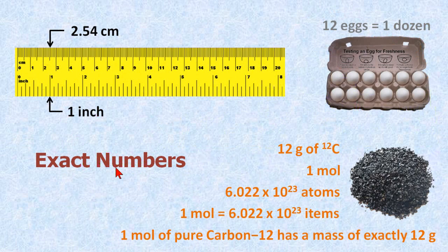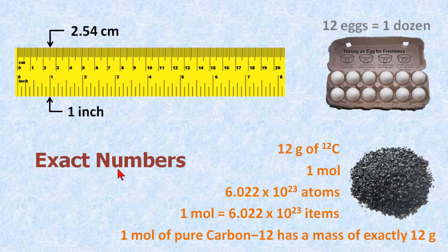Exact numbers differ from measured numbers in that they are exact. An easy example for most people to visualize is 12 eggs. 12 eggs is exactly one dozen. You can't have partial eggs.